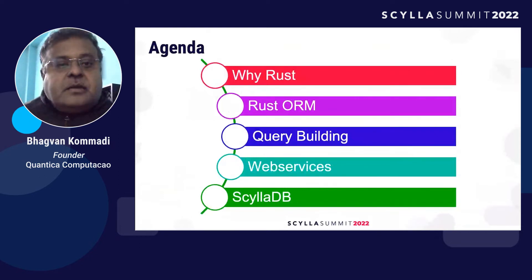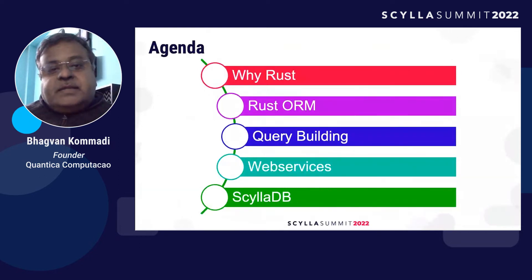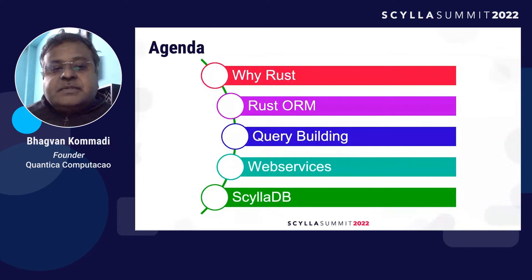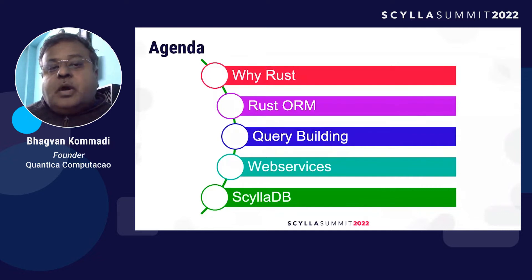To start off the agenda: why is Rust so popular? How do you do object-relational mapping with Rust and query building in Rust? And how do you work with web services, specifically with ScyllaDB? How do you go about doing ORM with Rust?